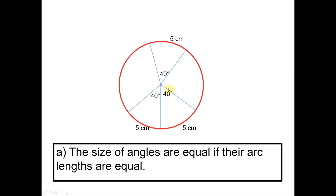The angles have the same value — 40, 40, 40 — if the arc lengths are all the same. And conversely, if they have the same angles at the center, the arc lengths will be the same. This is the first property.